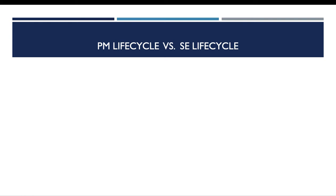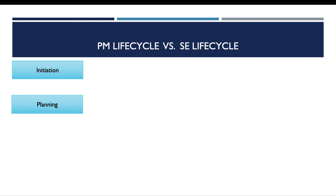For a more detailed answer, I've outlined each process by highlighting the phases and deliverables of each phase. The project management lifecycle is mainly composed of four phases: initiation, planning, execution, and closeout.